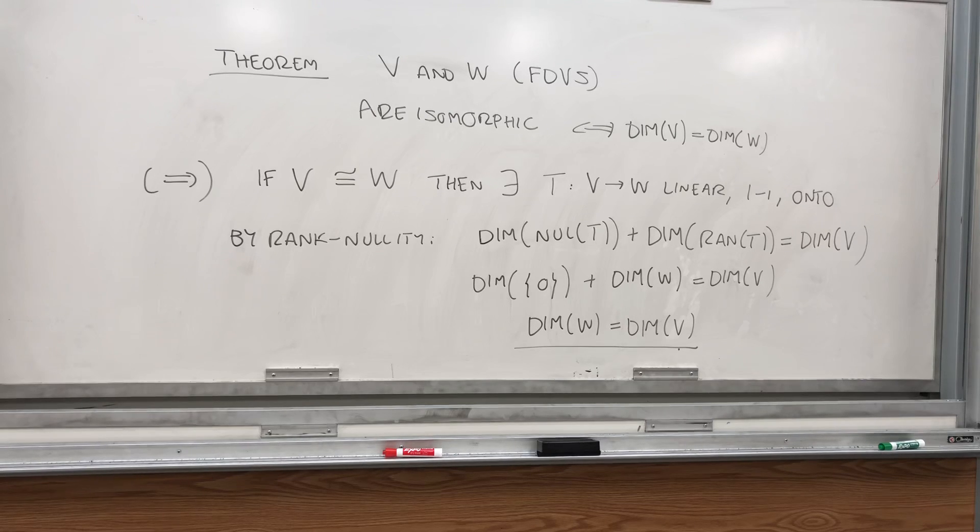Ta-da! So, if they're isomorphic, and again, they have finite dimension, otherwise this theorem wouldn't hold, then we have that the dimension of V equals to the dimension of W.